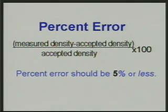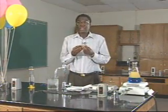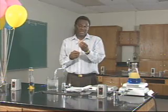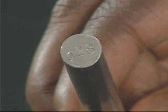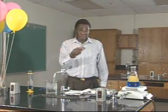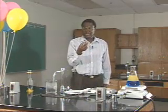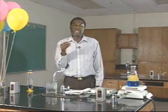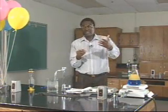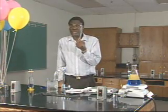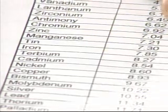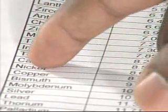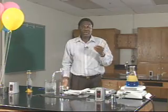The third part of the experiment is to obtain the density of an unknown material. The unknown materials are cylindrical bars of metal, each with a number on them — make sure you record that number, as it is needed for grading. Measure the mass of the unknown on the balance, then measure its volume using water displacement. Divide the mass by the volume to get the density of your unknown metal. Go to the table at the end of the experiment and see which listed metal has a density closest to your measured value.